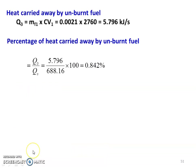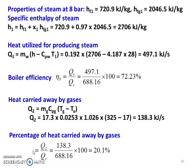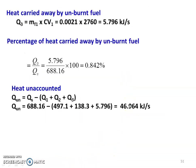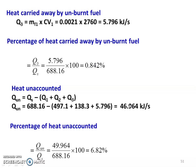The answers to Example 9: boiler efficiency is 72.23%; percentage of heat carried away by flue gases is 20.1%; percentage of heat carried away by unburnt fuel is 0.842%; and percentage of heat unaccounted for is 6.82%.